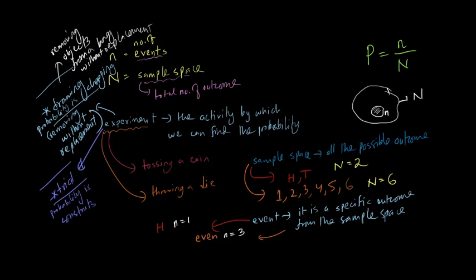A specific desired outcome from the sample space is known as an event. For example, looking for a tail or a head when you toss a coin is an event. When you throw a die and want an even number, that is also an event — represented by lowercase n. Events can be more complicated: for example, you might repeat the experiment twice and the event could require the first toss to be heads and the second toss to also be heads. We'll discuss those more complex cases later.